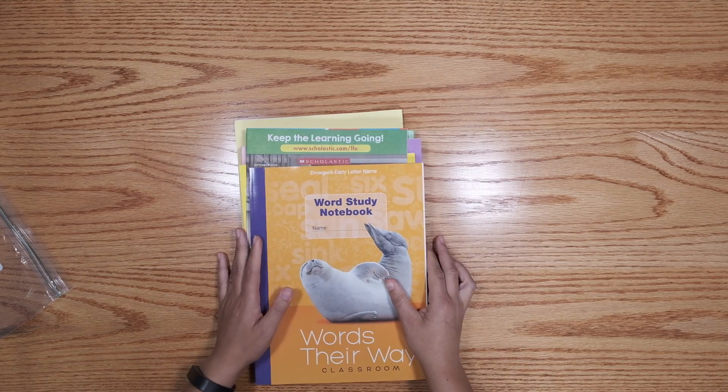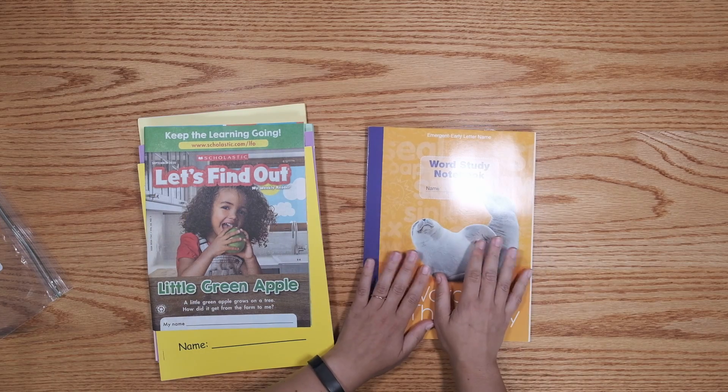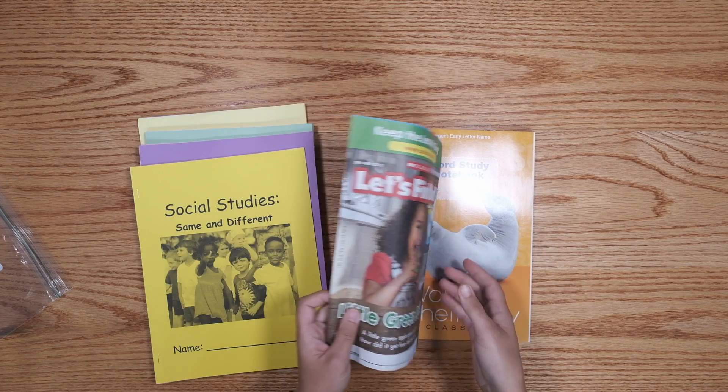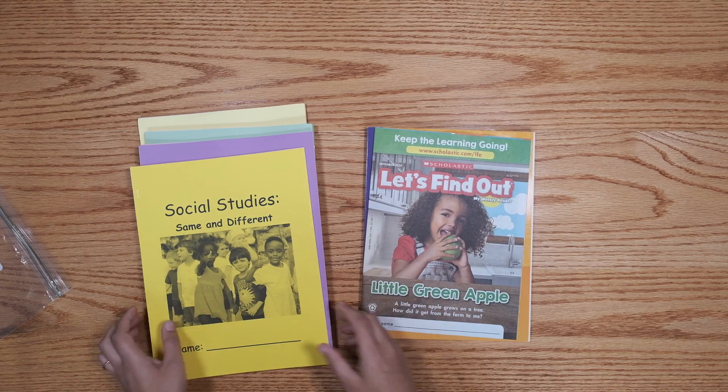Let's look at what else we have. In the bottom, you have a whole bunch of workbooks. This one we'll be using when we do some phonics work. These are magazines we will read for science and social studies.